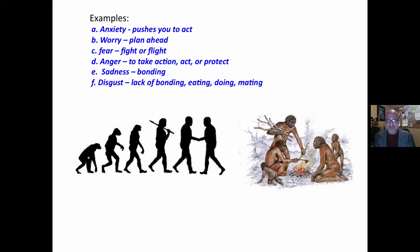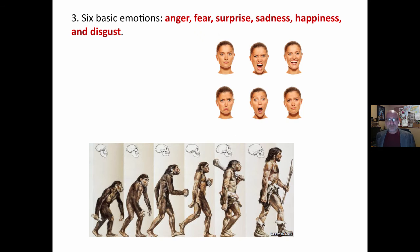Fear triggers that fight-or-flight response. Anger prompts us to take action or to protect. Sadness is a form that promotes bonding in the family unit. And disgust, a lack of bonding, prevents you from eating certain things or gets in the way of mating.